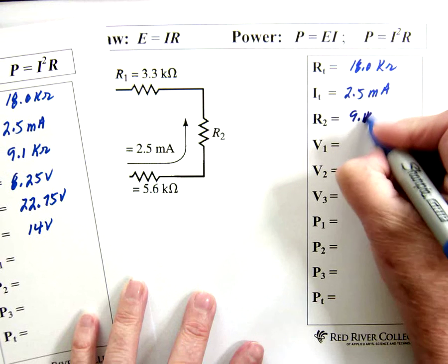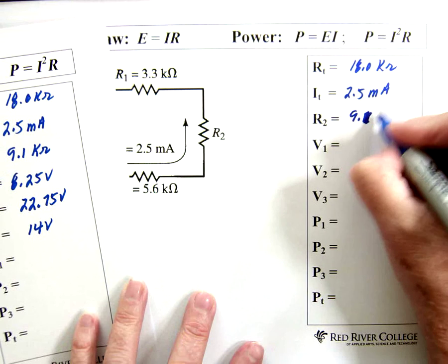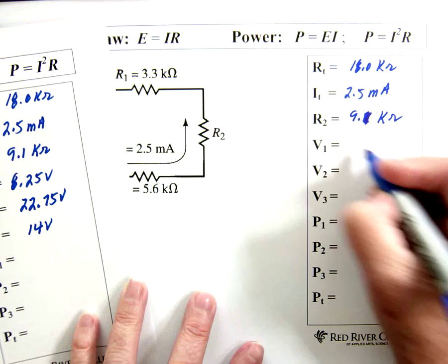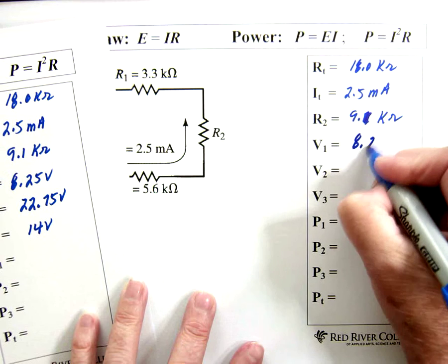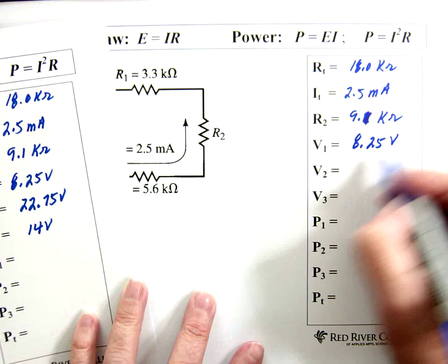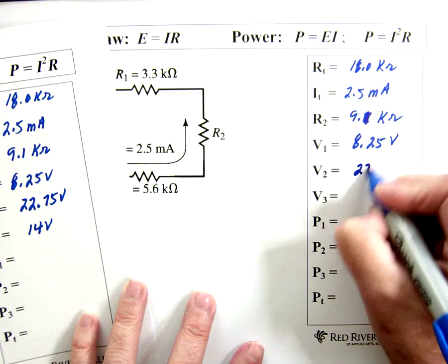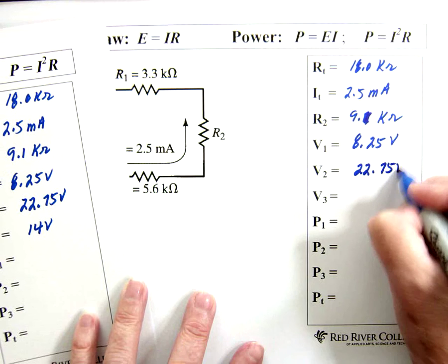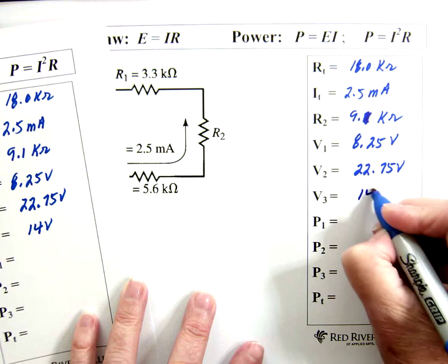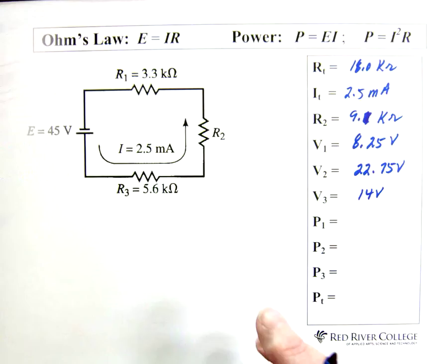Oops, oops, oops. That's a 1. 8.25 volts. 22.75 volts. And 14 volts. Alright. Power 1.